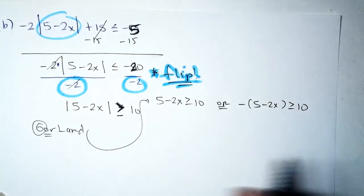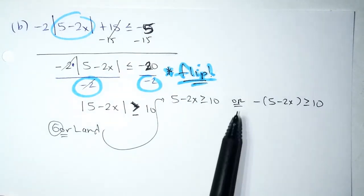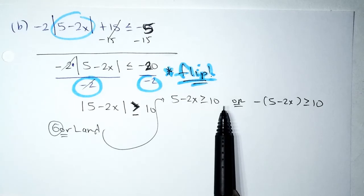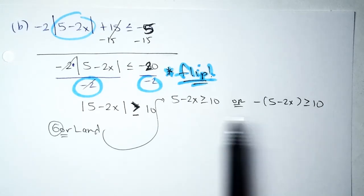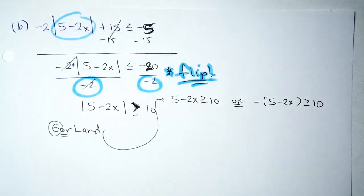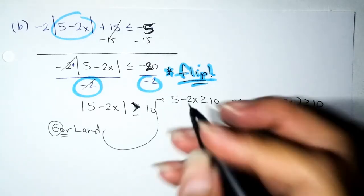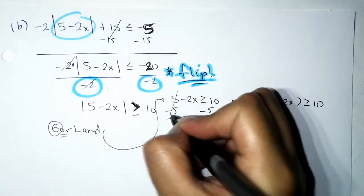Important reminder: on quizzes, tests, and homework, I need to see that two- or three-letter word — OR or AND. If you fail to write it, I have no way to know you were genuinely finding the union or intersection, and it will be marked zero.